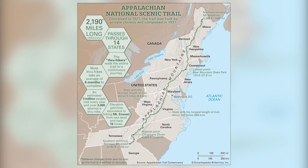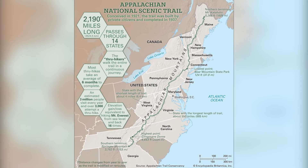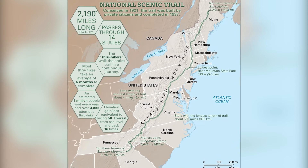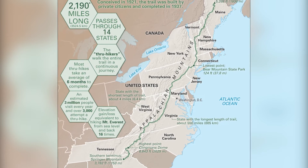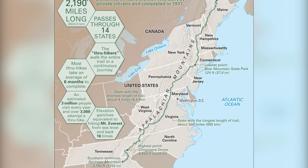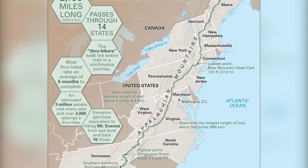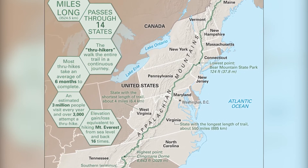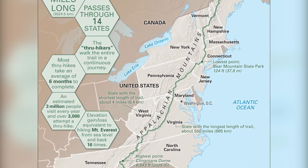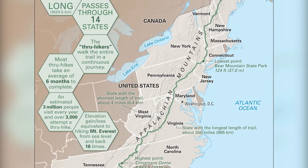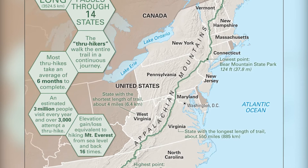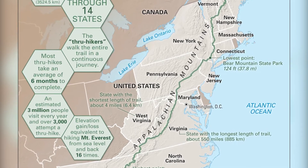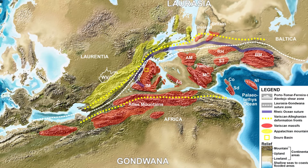Ocean floor rocks that would become the foundation of the Appalachian Mountains were formed a billion years ago. The Appalachian Mountains started forming about 470 million years ago when the North American plate began its journey on a collision course with the African plate. Approximately 270 million years ago, the plates collided, and the mountains we now know as the Appalachians were formed.